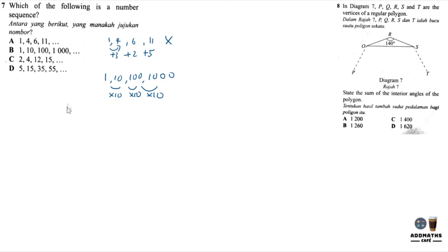We can't make any conclusion yet. For C, 2 to 4 to 12 to 15, this is times 2, 4 to 12 is times 3, 12 to 15 is plus 3. It goes from times to plus, so it's not possible for C. For D, 5 to 15 to 35 to 55. 5 to 15 is times 3, 15 to 35 is plus 20. You can't times to get 35, so this is impossible. The answer is only B.